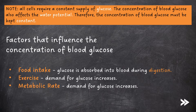When you eat food, your concentration of blood glucose will increase because glucose is absorbed into the blood from the small intestine during digestion. Exercise also affects the concentration of blood glucose because the glucose demand of cells increases for the increased rate of respiration. The same happens when your metabolic rate increases — the glucose demand of cells increases for the increased rate of respiration.